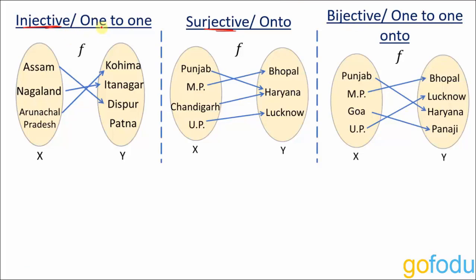An injective function, also called a one-to-one function, maps each element of X to a distinct element of Y. No two elements of X are mapped to the same Y. For example, Assam is mapped to Dispur, Nagaland to Itanagar, Arunachal Pradesh to Kohima — each element in set X is mapped to a distinct element in set Y.